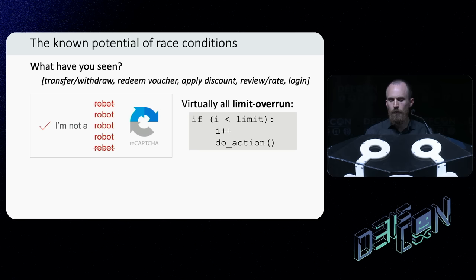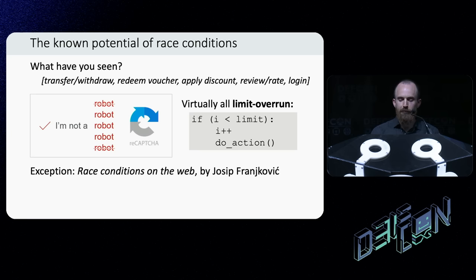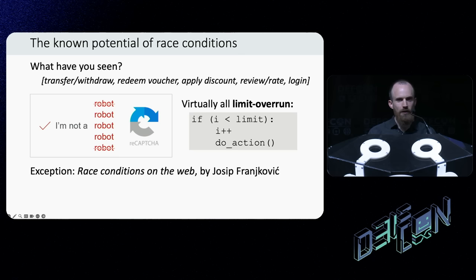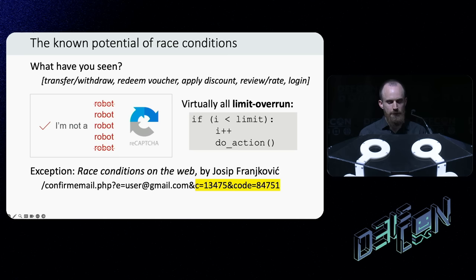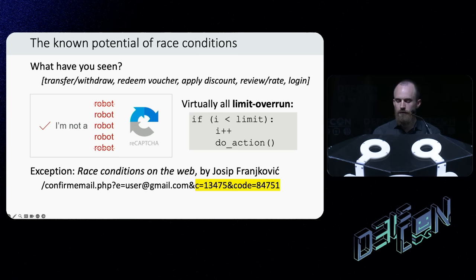But if you go digging through every post you can find on the topic, you'll land on one called Race Conditions on the Web by Josip Frankovich. In this post, he describes four vulnerabilities — three of them are regular limit overruns, and one of them is different. The vulnerability he found took two months just for him and Facebook's security team to figure out how to replicate it. The issue was that sometimes when changing your email, Facebook would put two confirmation codes for two different addresses using two different parameter names in a single email. I had no idea what was happening, and I don't think they did either. But one thing was clear: this wasn't a limit overrun vulnerability. So last September, six years after I first read that blog post, I decided to try and figure out what happened — and gradually came to realize that the race condition attacks we all know and love are just toy vulnerabilities compared with what else is out there.